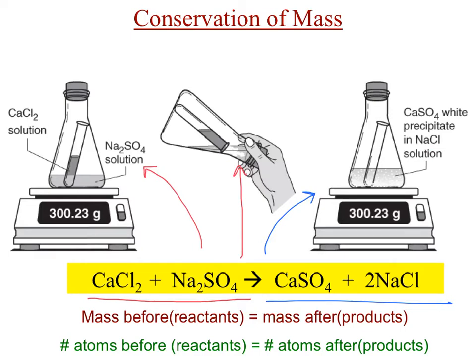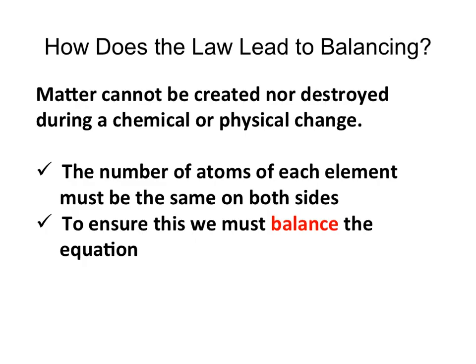So basically what this means for us is that the number of atoms on each side of the reaction must equal each other. This is because matter is neither created nor destroyed — it just changes its form. So how does the law lead to balancing? Well, the number of atoms of each element must be the same on both sides, and to ensure this, we must balance the equation.